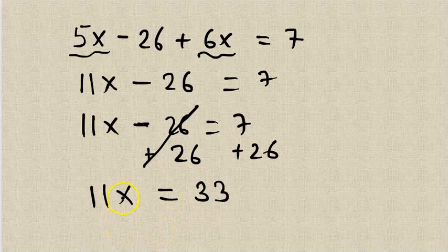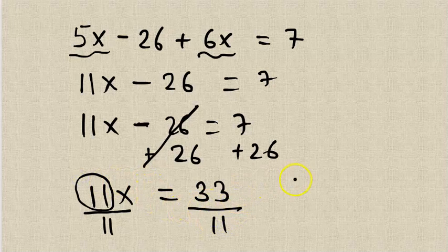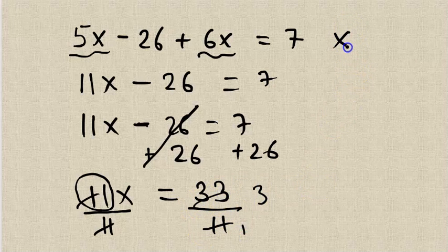Now what should I do? In order to get the value for x, I divide the coefficient of x to both sides. The coefficient, this is what I am calling the coefficient—in this case it is 11. Therefore when you divide 11 by 11, that is 1. When you divide 33 by 11, that is 3. So what I have is x equals 3.